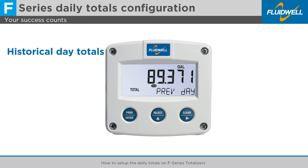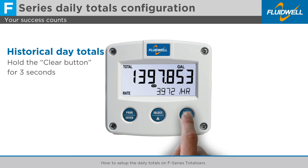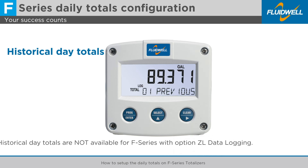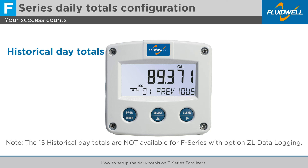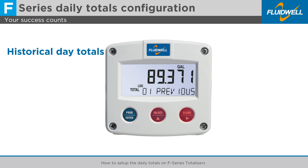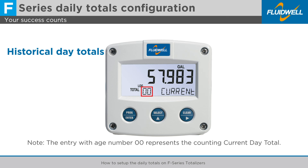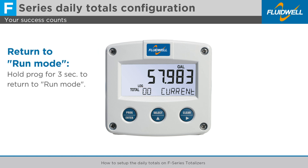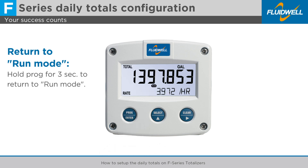To view the historical day totals, hold the clear button for 3 seconds to view the list of 15 historical day totals. Note that the 15 historical day totals are not available for F-Series with option ZL data logging. Use clear and select to scroll up and down through the list. The historical day totals are displayed with a number indicating the age in days. Note that the entry with age number 00 represents the counting current day total. Hold prog for 3 seconds to exit the list and return to run mode.